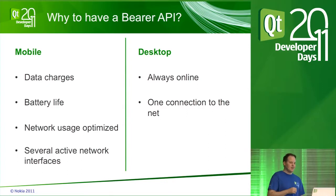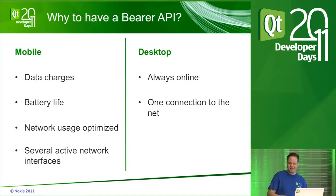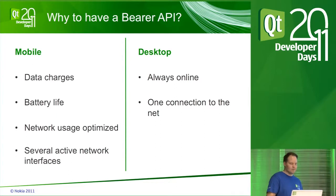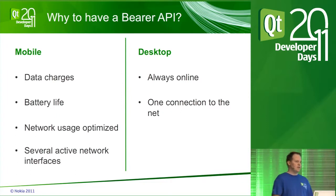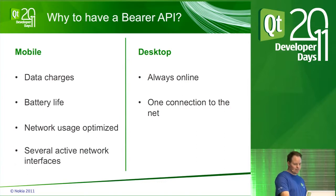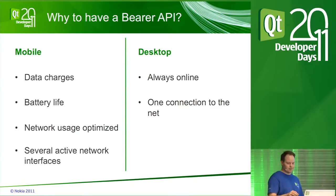Mobile devices are a bit different than desktops. You tend to be interested in the cost of having a network connection up. The cost could be data charges if you don't have a flat rate plan, or battery life will just be shorter with the network on. Also, mobile devices have these special access points for streaming and so forth, and you need to maybe take those into consideration when choosing which connection your application actually uses.